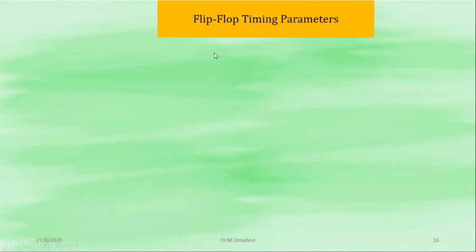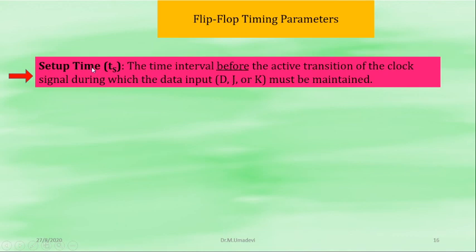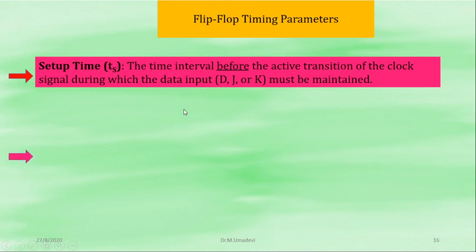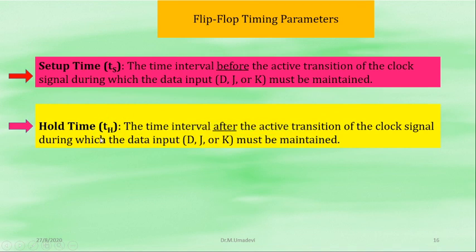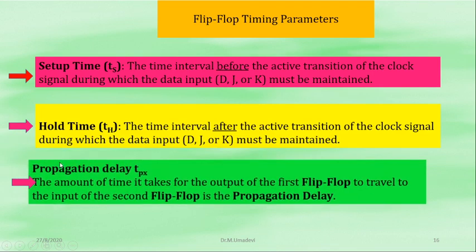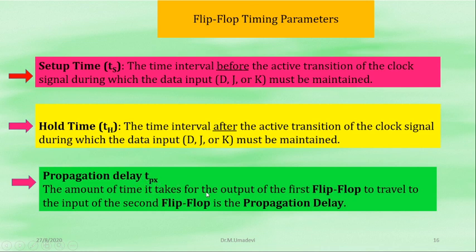Flip-flop timing parameters. Setup time (Ts): the time interval before the active transition of the clock signal during which the data input — D, J, K, or whatever the flip-flop type — must be maintained. Hold time (Th): the time interval after the active transition of the clock signal during which the data input must be maintained. Propagation delay (TPx): the amount of time it takes for the output of the first flip-flop to travel to the input of the second flip-flop.